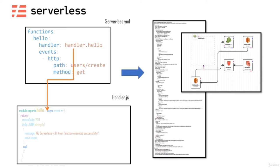Now that you have a brief overview of the serverless framework, the next question is: why do you need it? You could achieve the same using Terraform, Ansible, or CloudFormation. The answer lies in simplicity. A serverless application has a function and an event. The function points to your Lambda code, and the event points to an HTTP trigger. When you deploy this, it creates a Lambda called 'hello' with your code and also creates an API gateway connected to that Lambda.